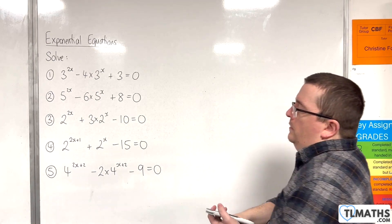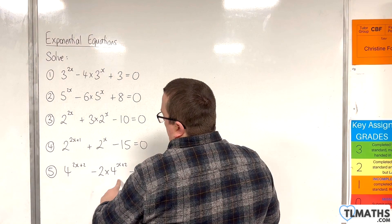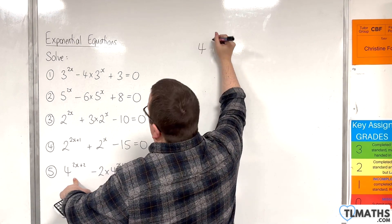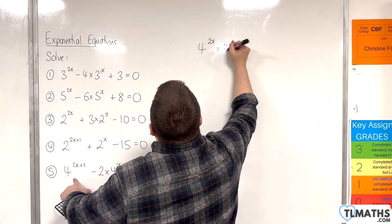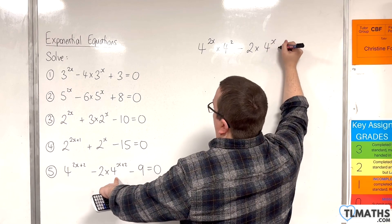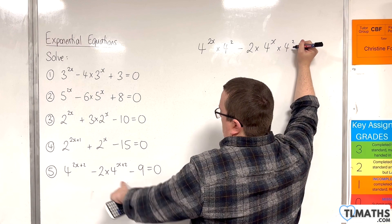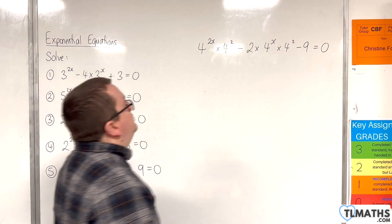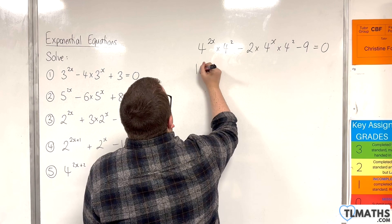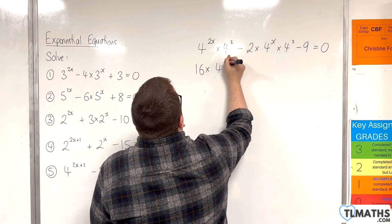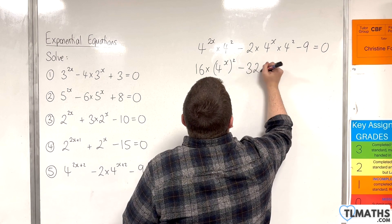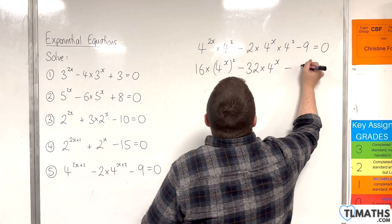Number 5: 4 to the power of 2x plus 2, take away 2 lots of 4 to the x plus 2, take away 9 equals 0. Write 4 to the 2x plus 2 as 4 to the 2x times 4 squared, and 4 to the x plus 2 as 4 to the x times 4 squared. Since 4 squared equals 16, we get 16 lots of 4 to the x all squared, take away 2 times 16 — so 32 lots of 4 to the x — take away 9 equals 0.